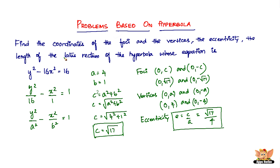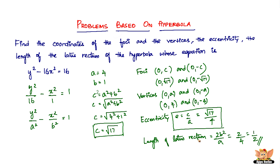Finally, we find the length of the latus rectum, which is given by 2b squared divided by a. So 2b squared is 2 times 1 equals 2, divided by a which is 4, giving us 1 by 2 as the length of the latus rectum of the hyperbola y squared minus 16x squared equals 16.